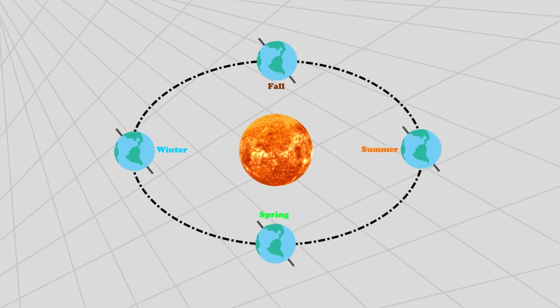Looking at the northern hemisphere, the axis points toward the Sun the most in June, specifically around June 21st. This represents the summer solstice. The axis points away from the Sun the most in December, around December 21st. This represents the winter solstice.